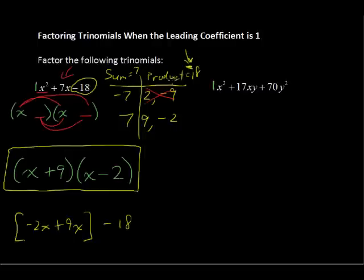And we started with the x times x is x squared. So we look for two numbers whose product is this last term and whose sum is the coefficient of the middle term.